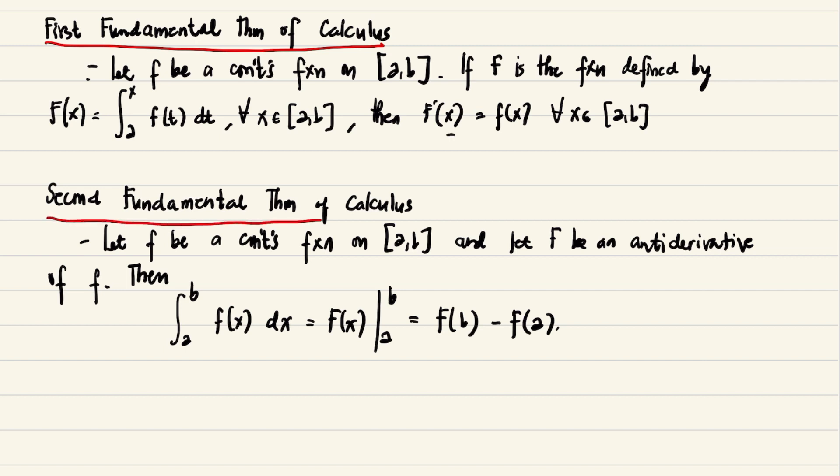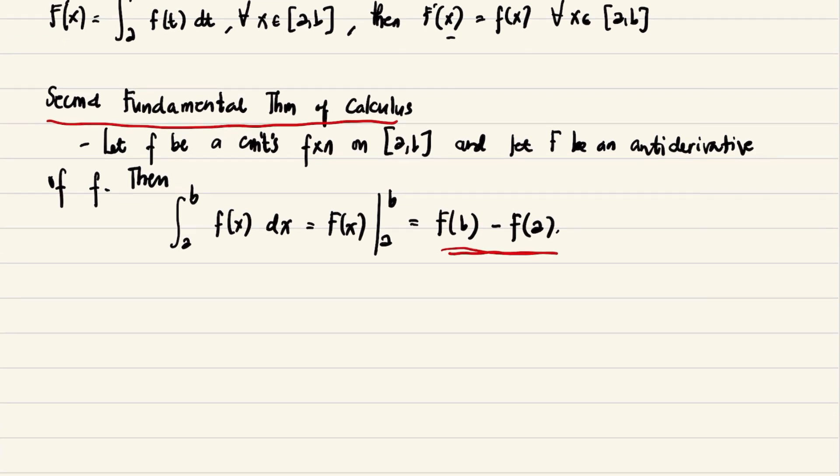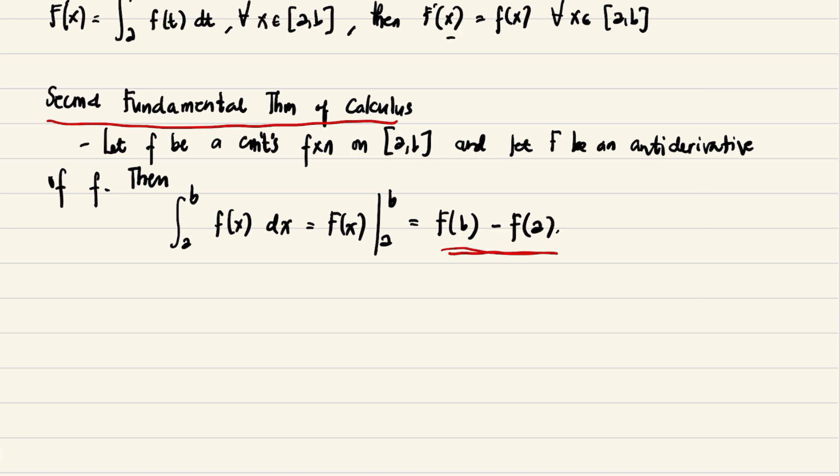The second fundamental theorem of calculus says here that your f is continuous on the closed interval [a,b], and your capital F is the anti-derivative of f. Then if you take the integral of f(x)dx from a to b, you evaluate them in this manner. Now that we have discussed the first and second fundamental theorem of calculus, we will now apply this in an example or in a lot of examples.